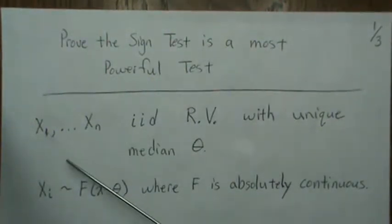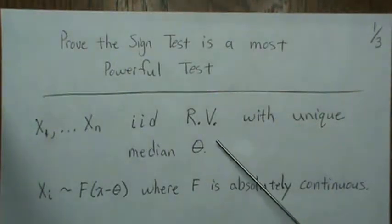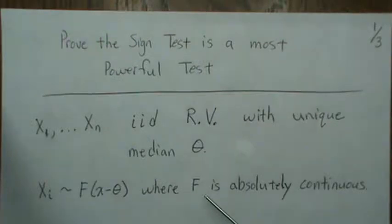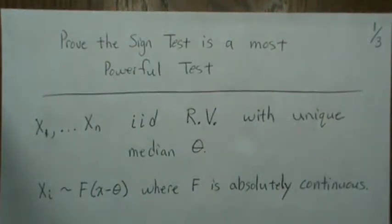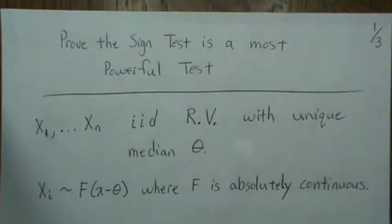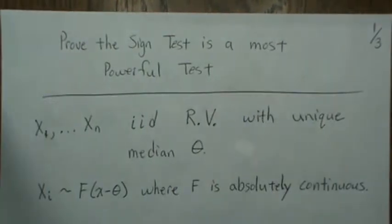The data: we assume they are independent identically distributed random variables with a unique median, and that X is distributed with F — this is a distribution function, not a density function — where F is absolutely continuous. Those are our two requirements: the distribution function is absolutely continuous and there is a unique median. Both are very reasonable assumptions and those are our only assumptions. If we add assumptions like the distribution is symmetric, the density is symmetric, or it's normal, then the most powerful test in that setting changes. But in this setting we're going to find what the most powerful test is.